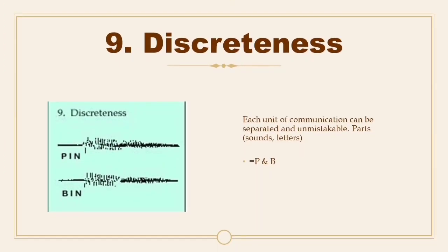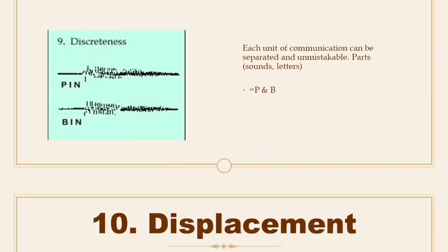Ninth: Discreteness. Each unit of communication can be separated and unmistakable. Parts such as sounds or letters can be categorized as belonging to distinct categories. There is no gradual, continuous shading from one sound to another in the linguistic system, although there may be a continuum in the real physical world. Thus, speakers will perceive a sound as either a P or a B, but not as a blend, even if physically it falls somewhere between the two sounds.